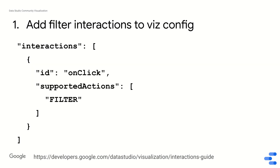In your viz config, there are already two keys you're probably familiar with: the data key and the style key. Now let's add a third one, interactions, where you configure the interactions for your visualization. We care about the visualization acting as a chart filter, so you provide an ID — here I've called it onClick, but that ID can be anything as long as you remember it, because we're going to use it in the code later. The other thing you need is the supported actions key, which is an array, and in that array we put FILTER in all caps because we want the visualization to act as a filter.